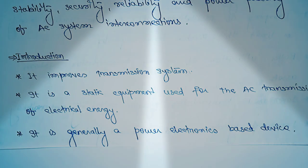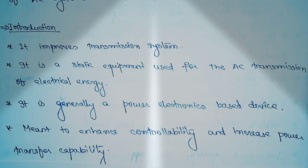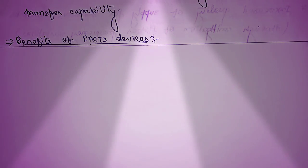It is used to enhance the controllability and the power transfer capability. So till now we have seen the introduction and the definition of FACTS devices. It is used to improve the transmission system, it is a static equipment, it is a power electronic based device, and it is used to enhance the controllability and increase the power transfer capability.